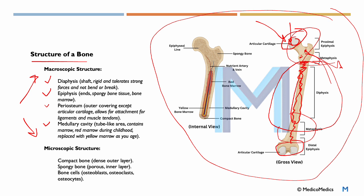As we mentioned, the covering of most of the bone is the periosteum. This is where muscle tendons or ligaments attach to the bone. If you look here, you see the medullary cavity, and it's a tube-like area that contains marrow—red marrow during childhood, which is then replaced with yellow marrow as you age.